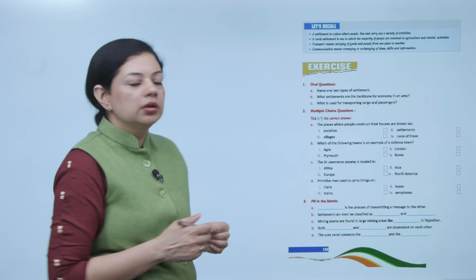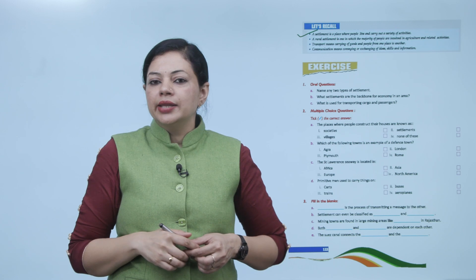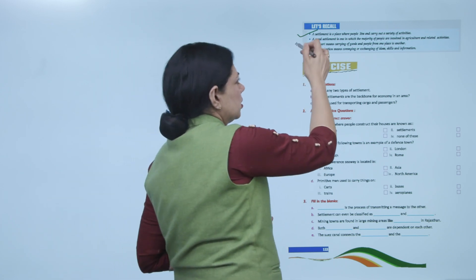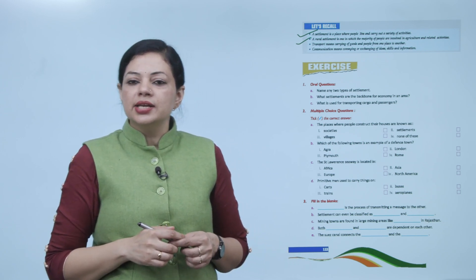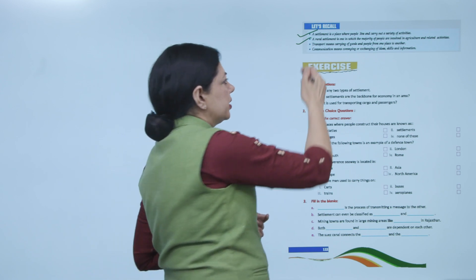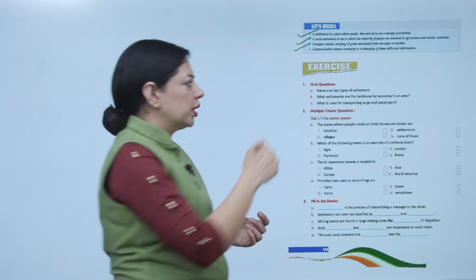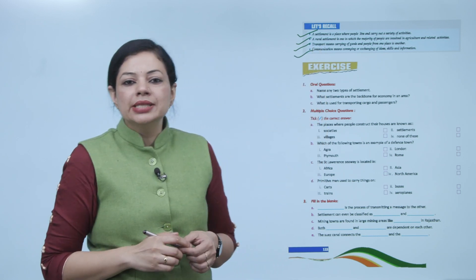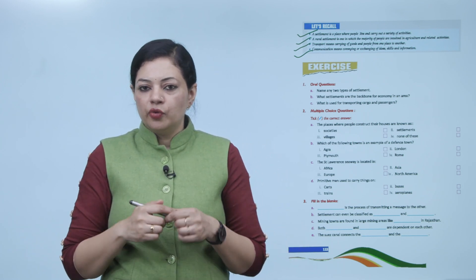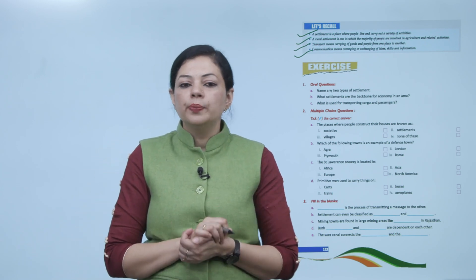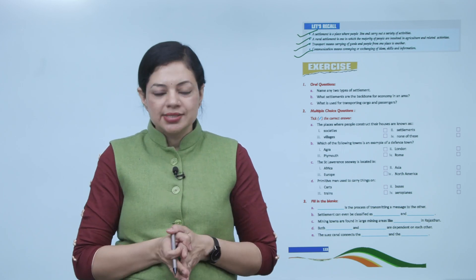Let us recall the chapter. A settlement is a place where people live and carry out a variety of activities. A rural settlement is one in which the majority of people are involved in agriculture and related activities. Transport means carrying goods and people from one place to another. Communication means conveying or exchanging ideas, skills, and information. I hope you have understood the chapter — read it once again and do the practice exercises yourself.